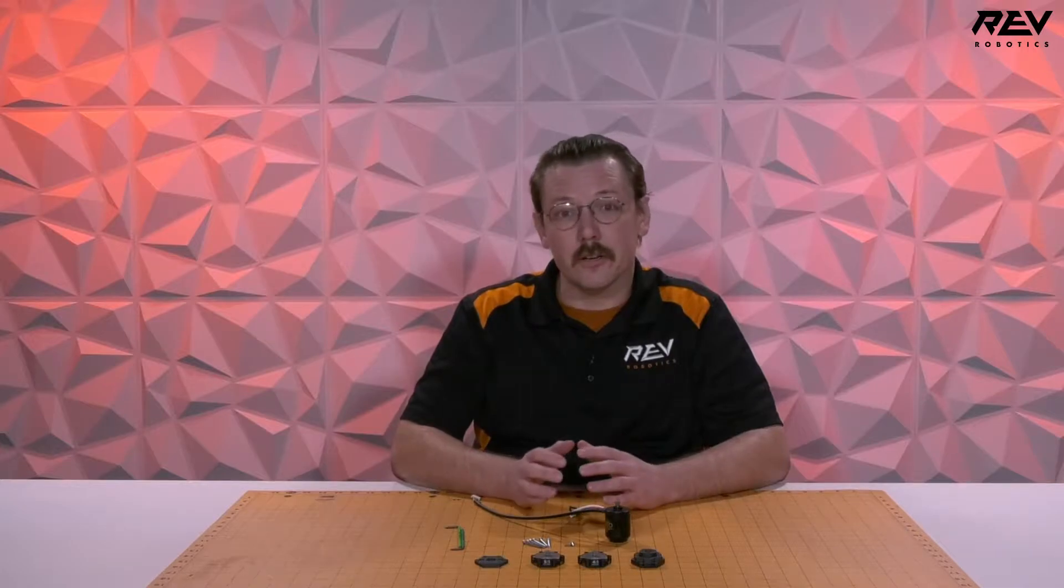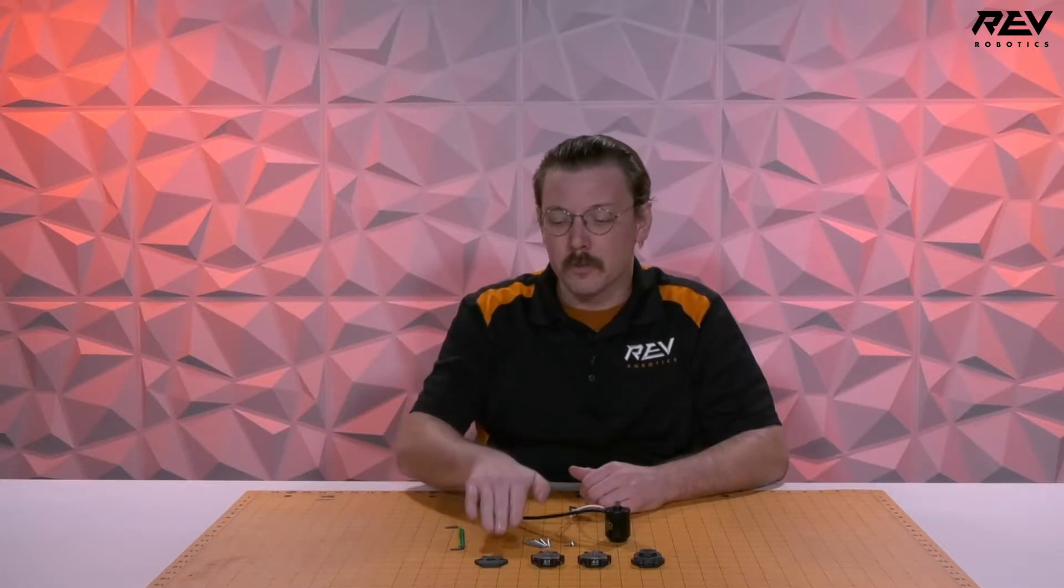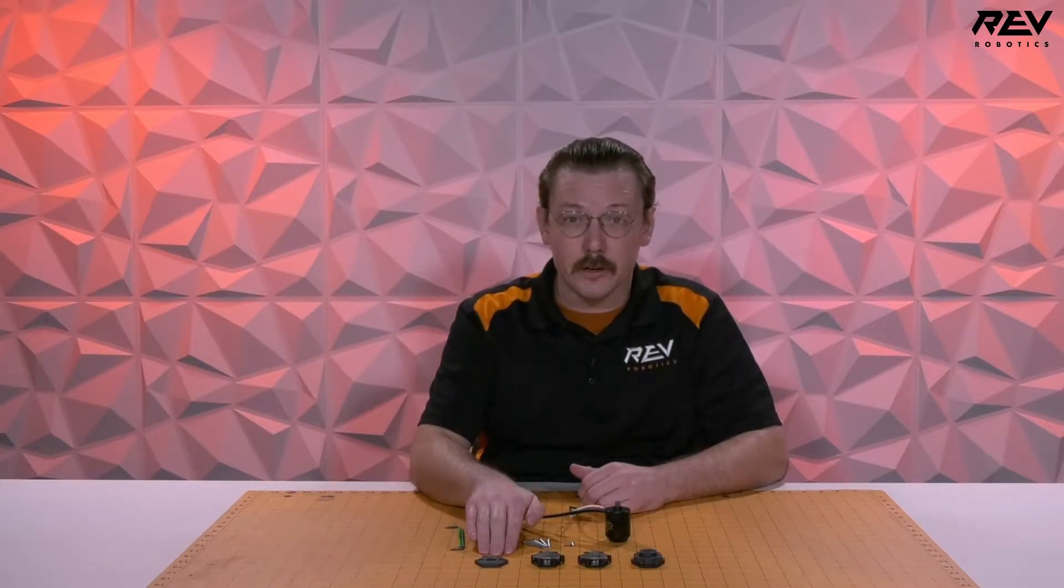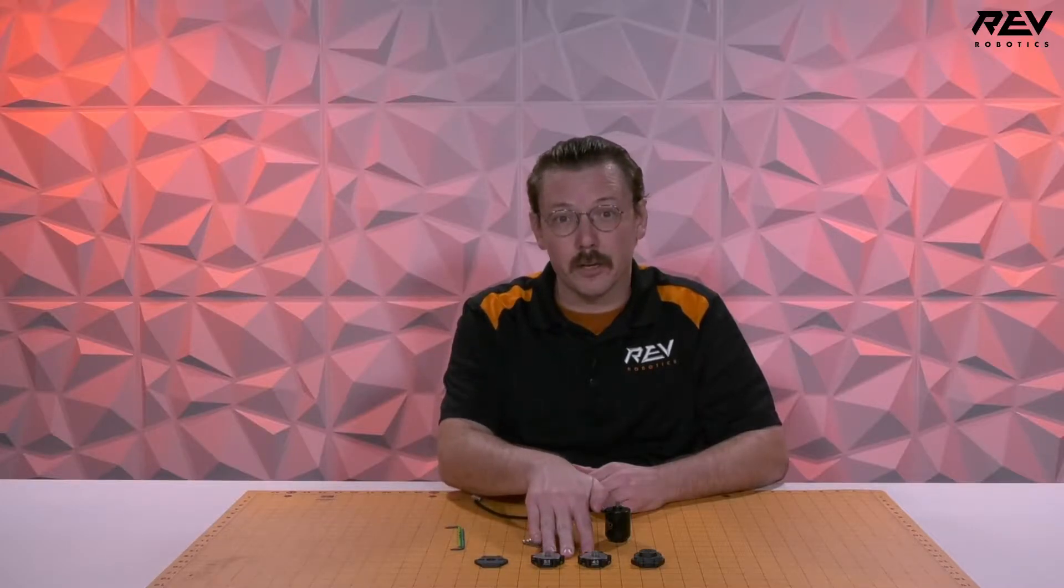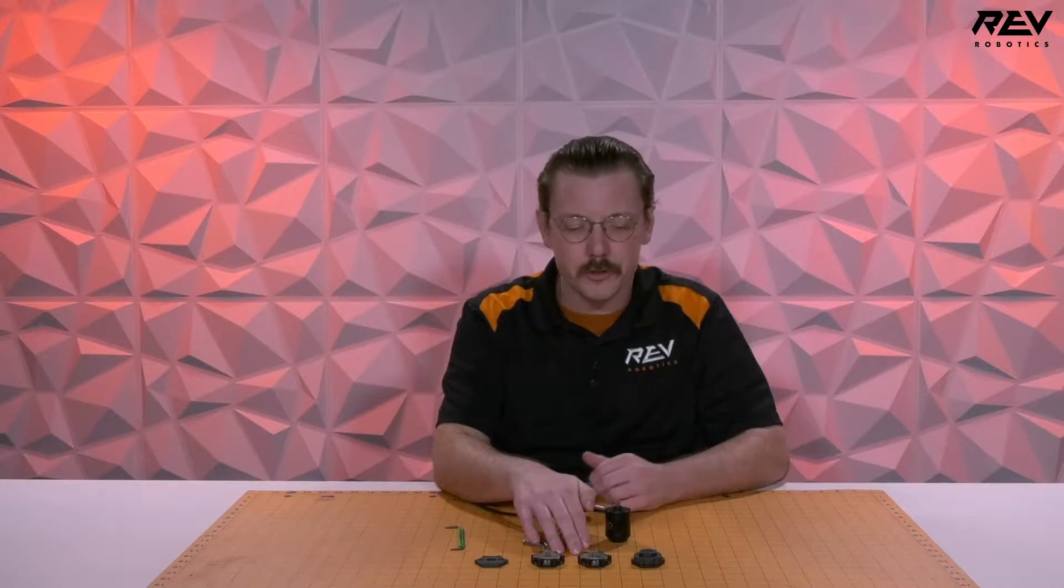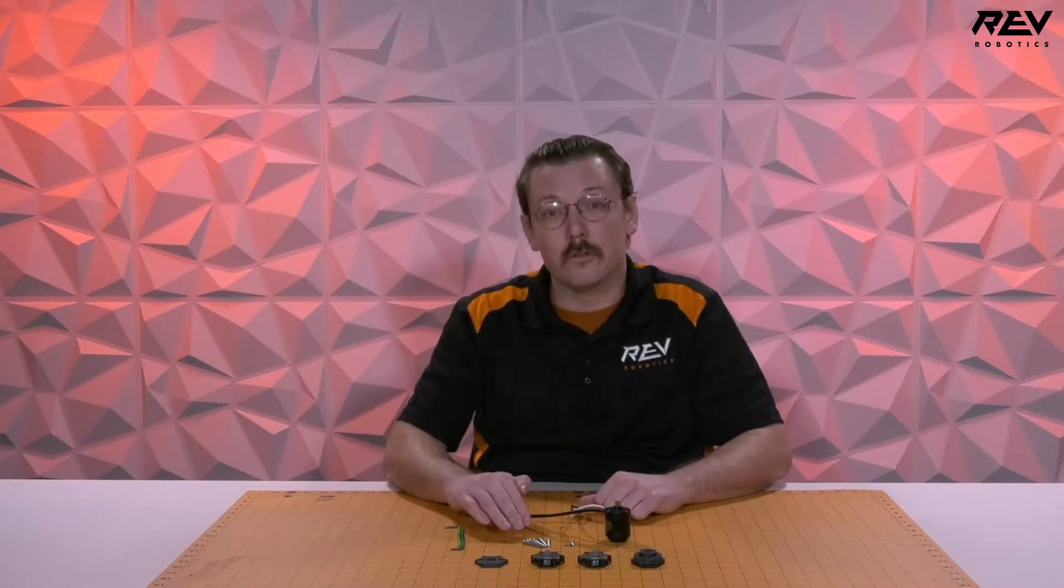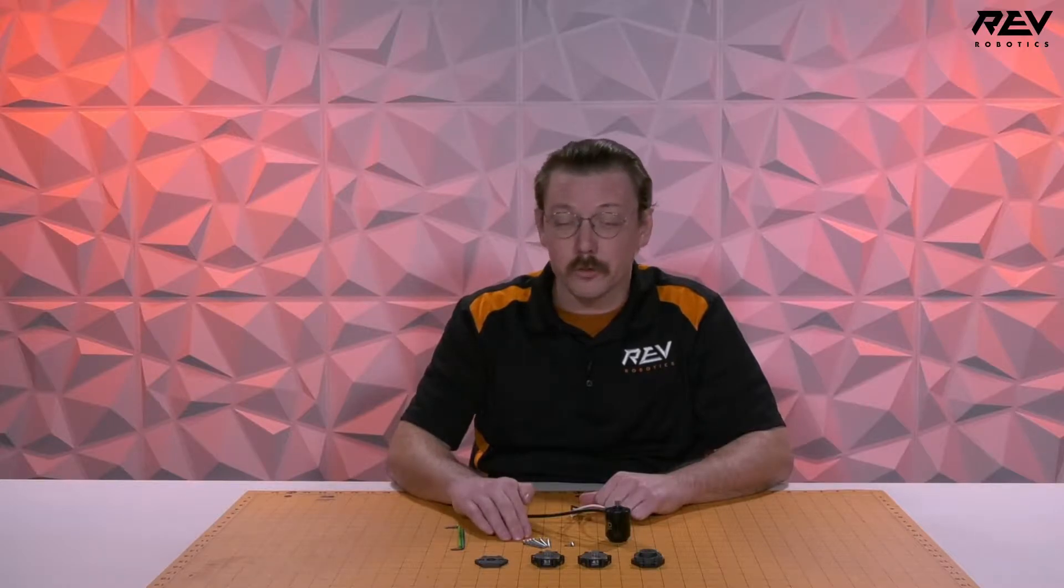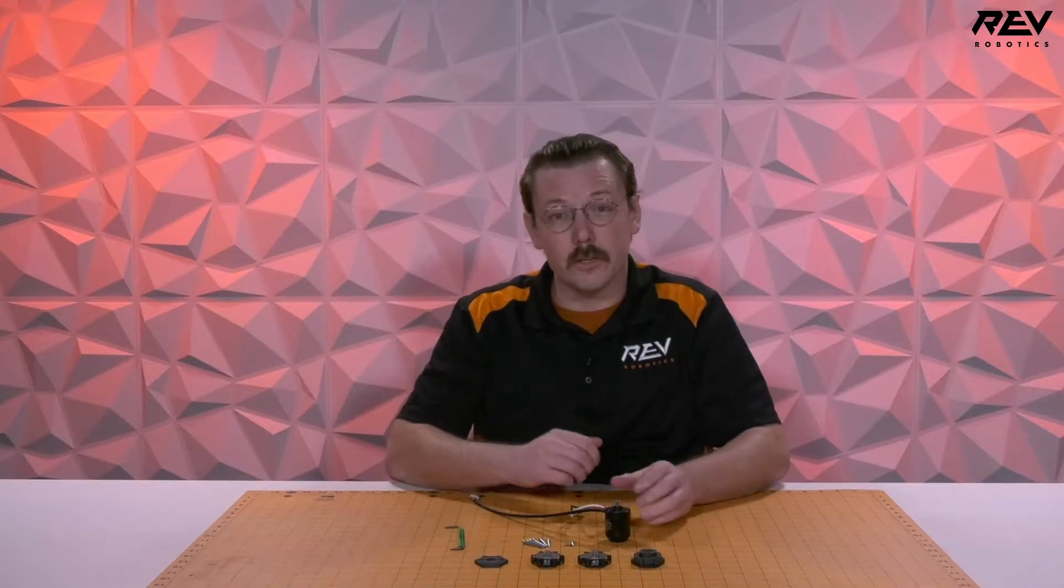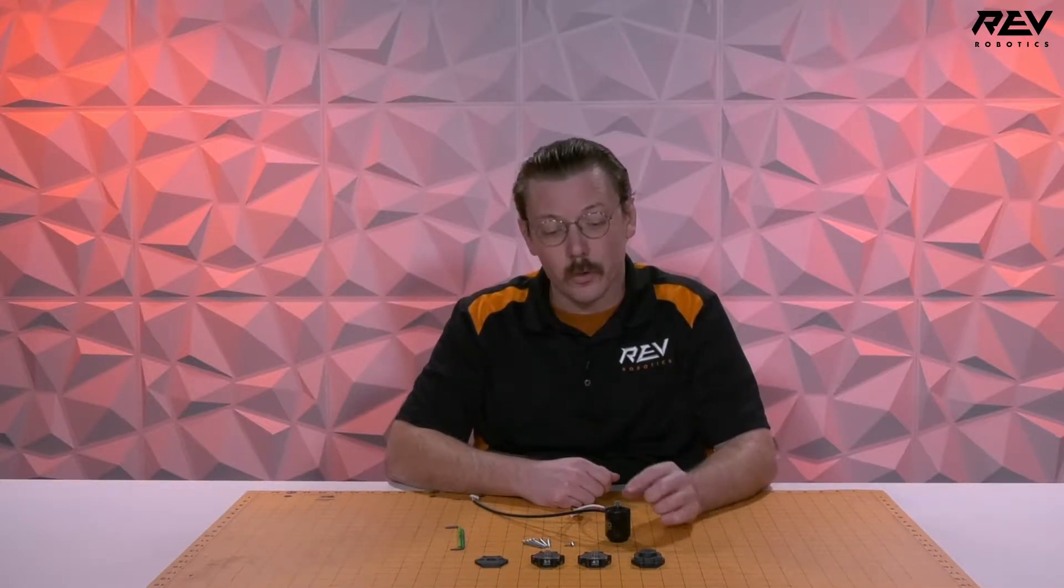For this process you'll need a few items before you get started. You'll need an ultraplanetary mounting plate, a couple of ultraplanetary cartridges - in this case we're using a 5 to 1 and a 4 to 1 cartridge - the ultraplanetary output, the ultraplanetary hardware pack, and your NEO 550 motor with an ultraplanetary pinion already pressed on.